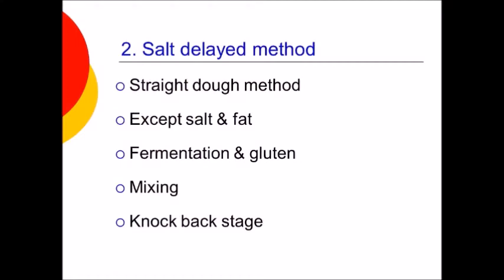The next bread making method is the salt delay method, which also comes under the straight dough method. In this method, all ingredients are mixed except salt and fat. Due to the absence of salt, the speed of fermentation is enhanced and gluten matures in a reasonably short time. Three-fourths of the mixing should be given initially, and one-fourth of mixing at the time of adding salt, which is added at the knockback stage.